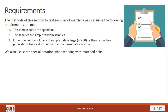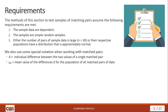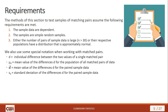We have special notation when working with matched pairs. Lowercase d is the individual difference between two values of a single matched pair. μ_D is the mean value of all those differences for the population of matched pairs. D-bar is the mean of the differences for the sample. S_D is the standard deviation of the differences for the paired sample data, and n is the number of pairs.